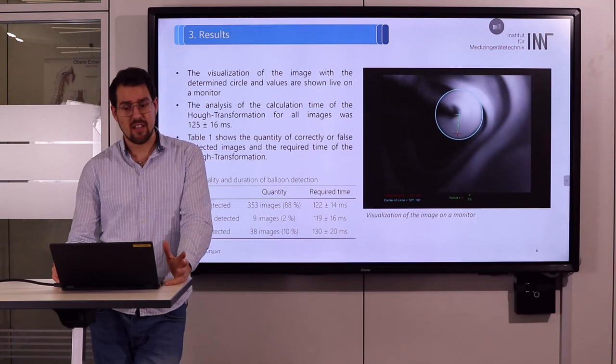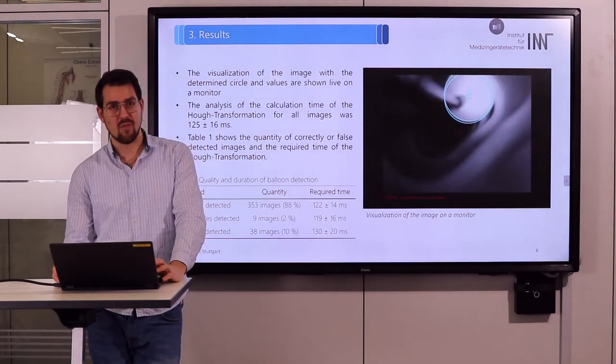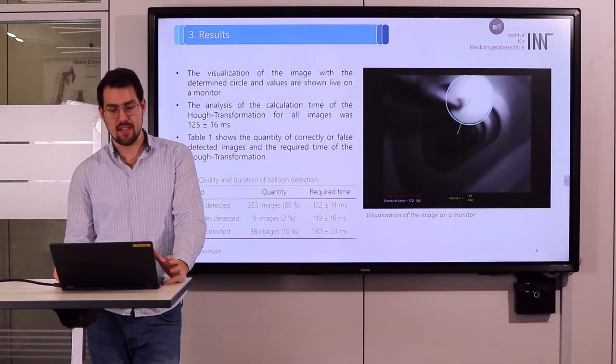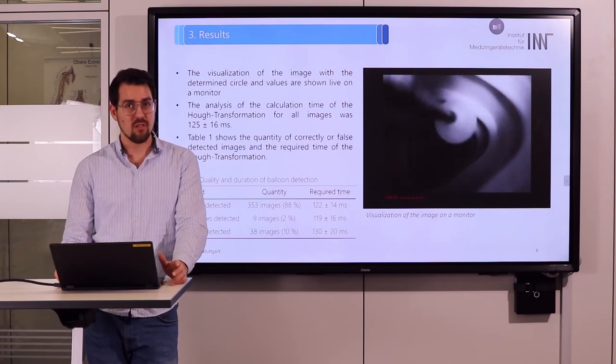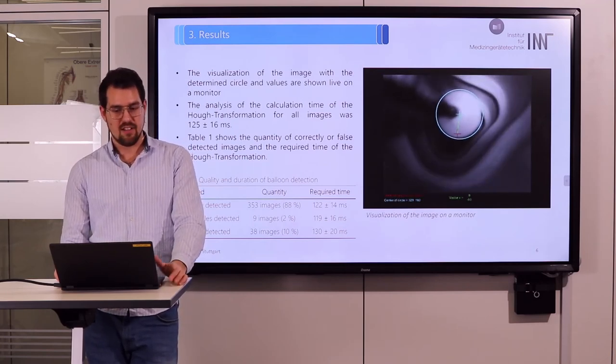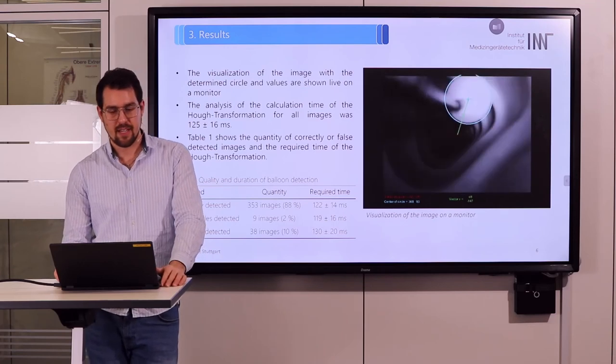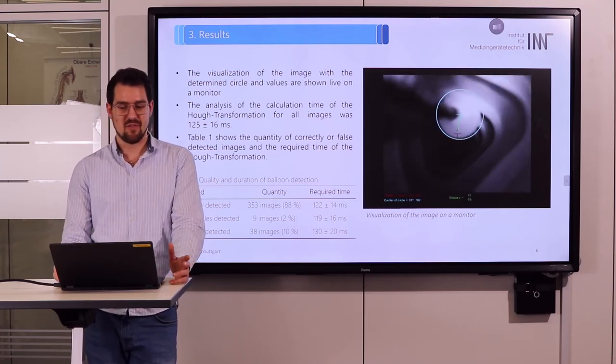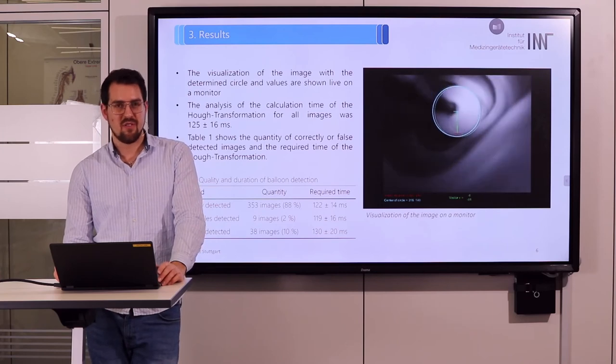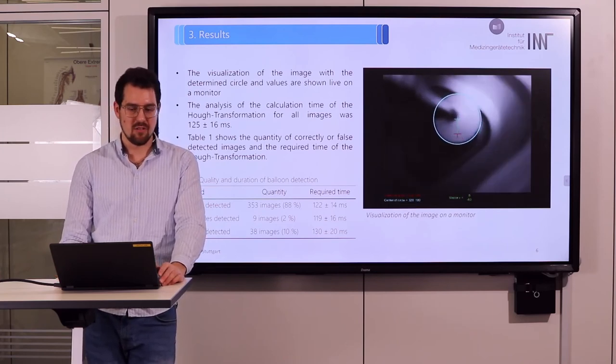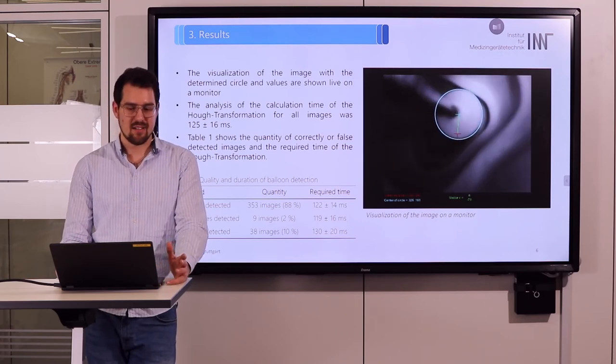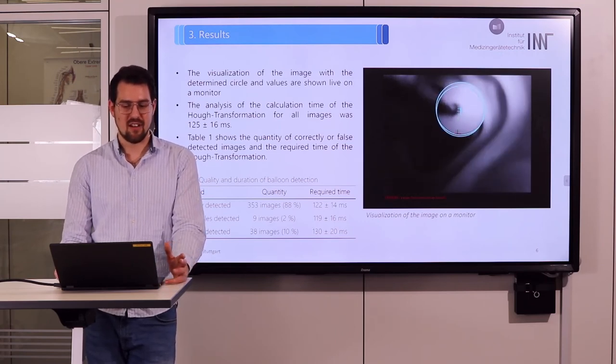On average, the Hough transformation took about 125 milliseconds, and in 88 percent of all images the balloon was identified as a circle. In 2 percent of images several circles were found, making it impossible to distinguish which belonged to the balloon. In 10 percent of images no circle was identified at all.